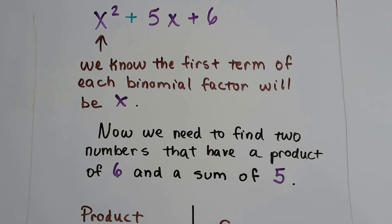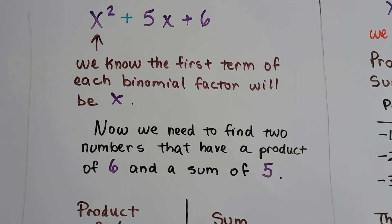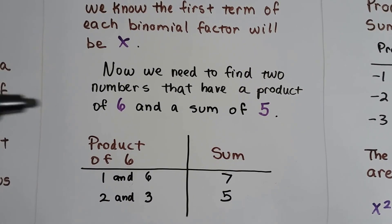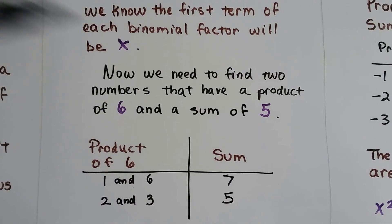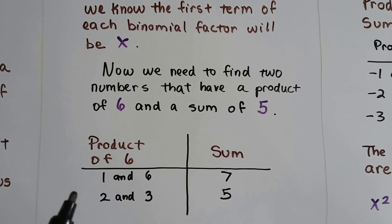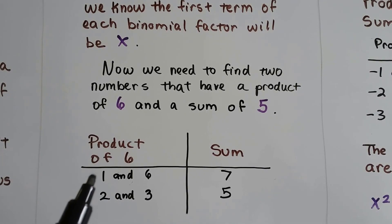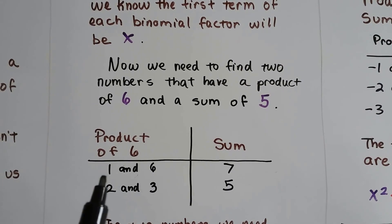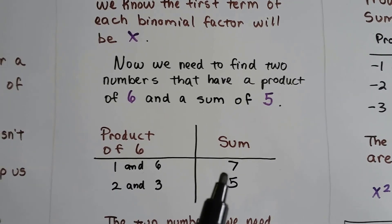Now we need to find two numbers that have the product of 6 and a sum of 5. So we make a little table, and on this side we write product of 6, and on this side we write sum, and we start listing what two numbers are the product of 6. Well, 1 times 6 is 6, and 2 times 3 is 6. When we add 1 and 6 together we get a sum of 7.